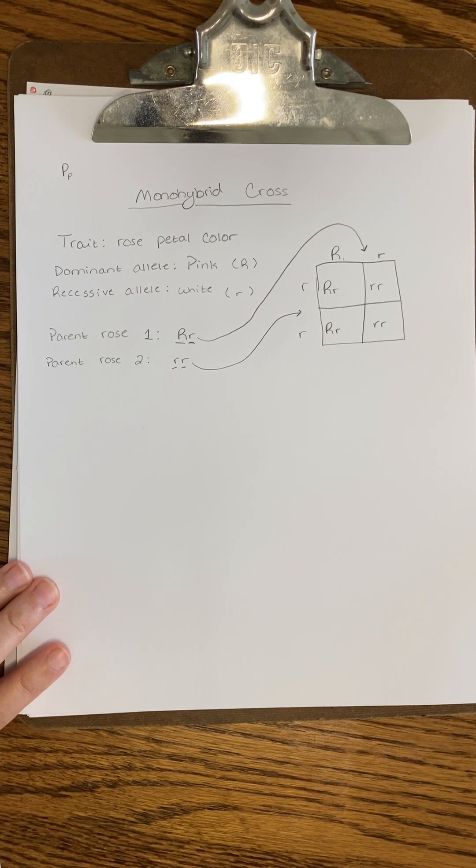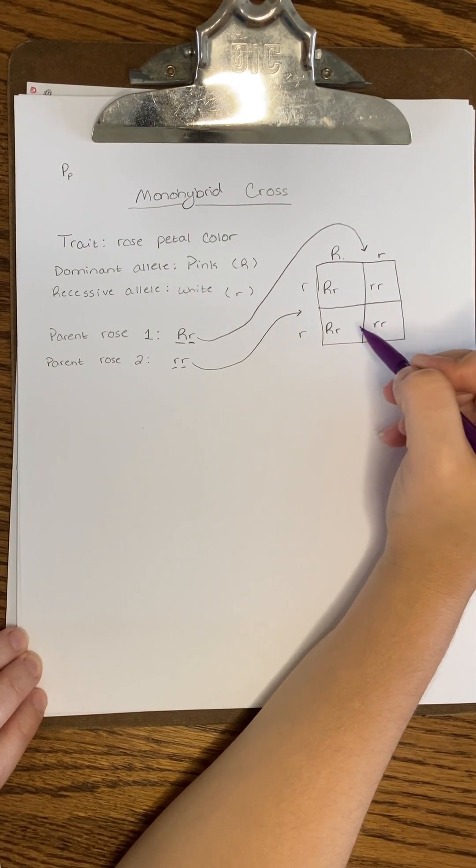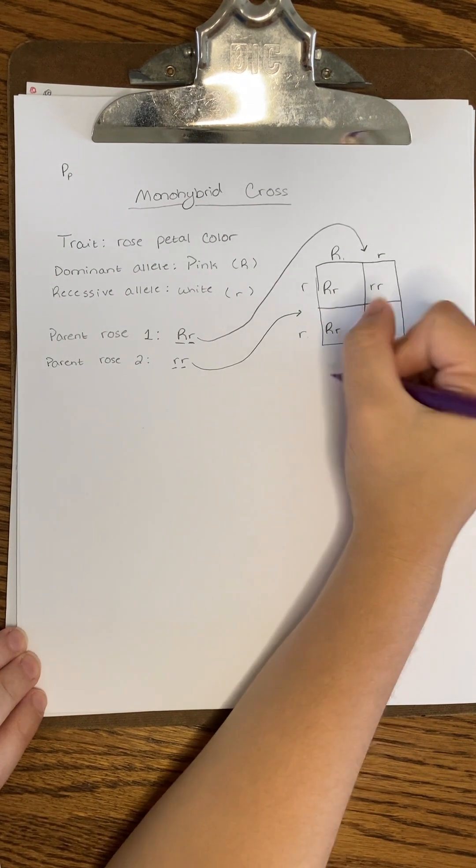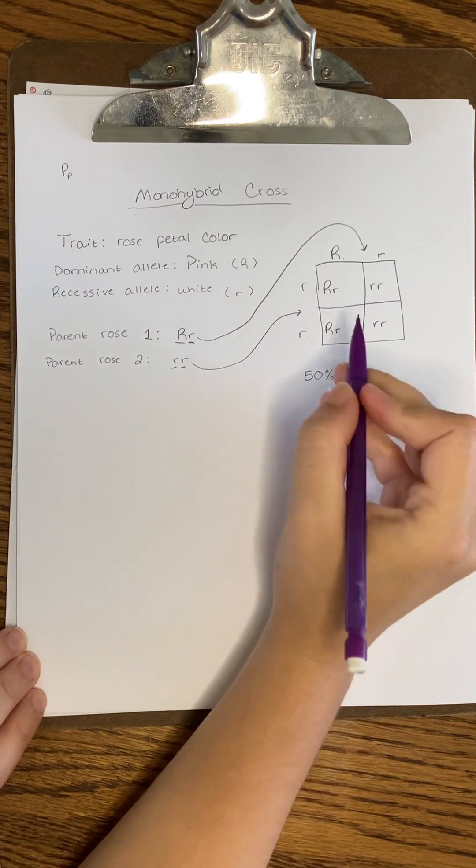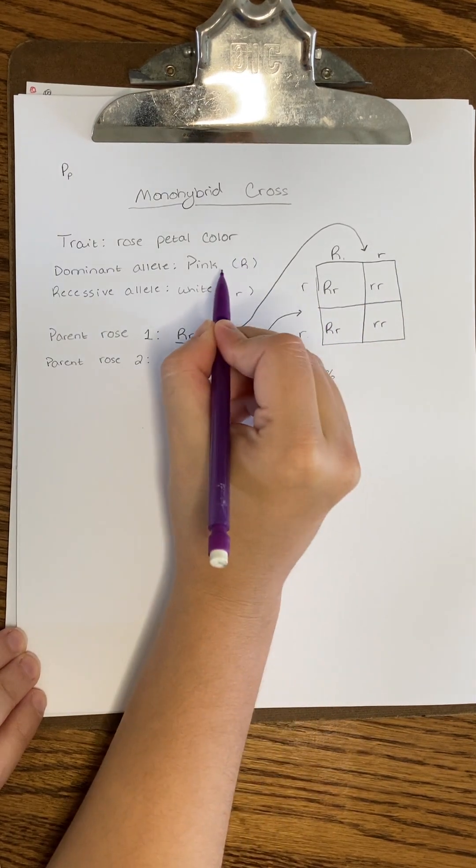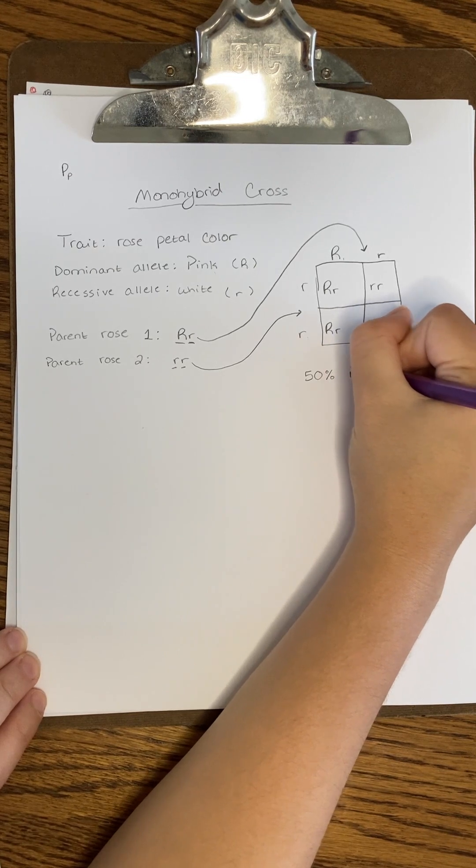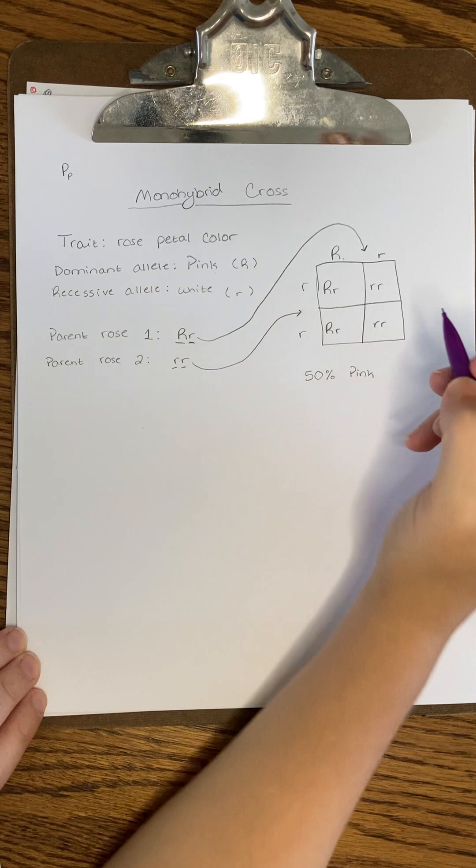So what does all this mean? Well, two of the inner boxes have the dominant allele of pink petals, that capital R. And even if there's only one dominant allele present, that's the one that's going to show up. So in this case, 50% of my offspring are going to have those pink petals. And the other 50% are going to have white petals.